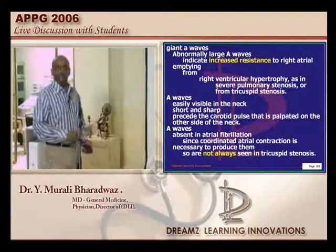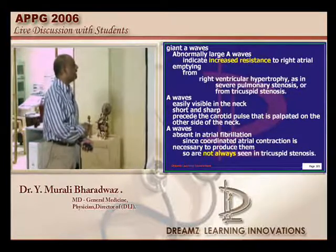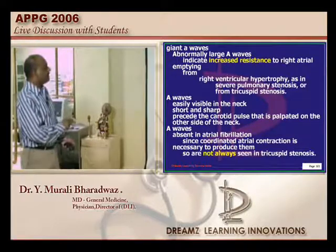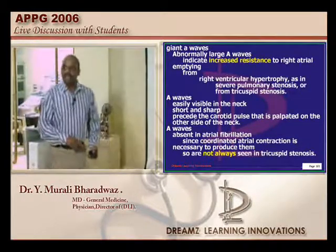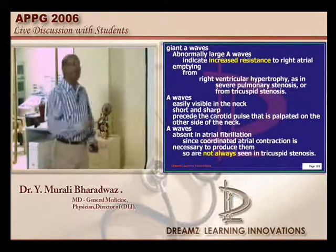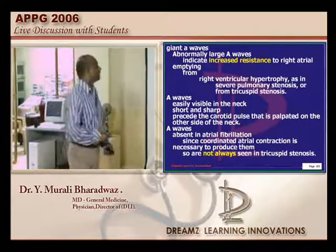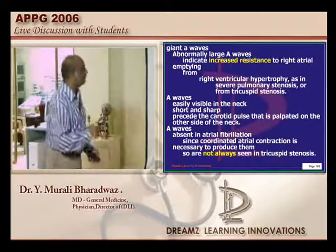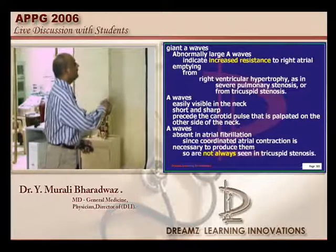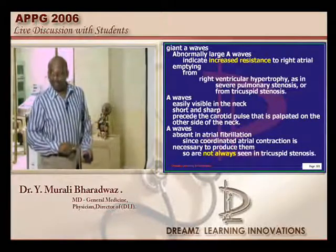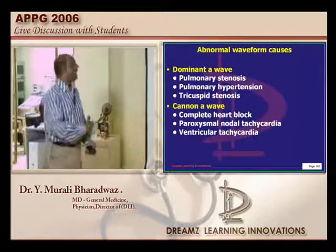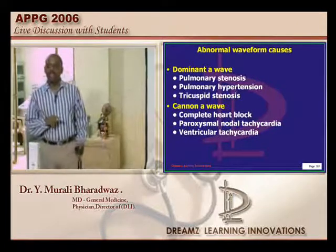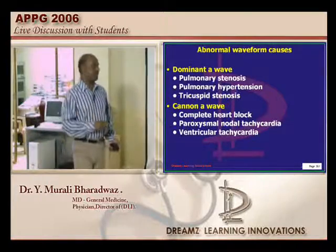Cannon A waves are seen in complete heart block, ventricular tachycardia, or paroxysmal nodal tachycardia. When do you see the dominant V wave? Typically it is seen in tricuspid regurgitation. The finding in tricuspid regurgitation is not a giant A wave — it is a prominent V wave. Giant A wave: tricuspid stenosis, pulmonary hypertension, complete heart block, junctional rhythm — in all these situations.